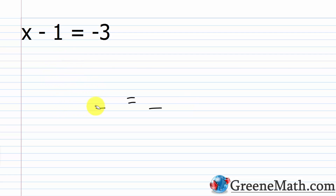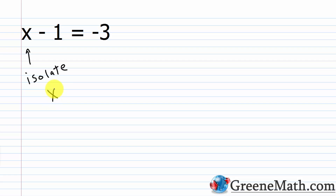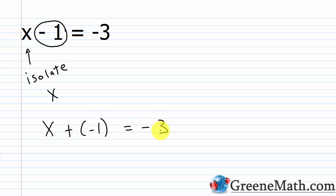We're going to begin with x minus 1 equals negative 3. Our goal is to isolate the variable in the equation — I want to isolate x on the left side. I can think of this as x plus negative 1 equals negative 3. If I add 0 to something, it's just the same number. So if I make this into x plus 0, I would just have x — nothing other than x on that side.